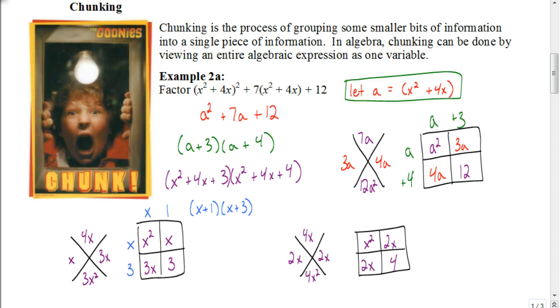So let's find the greatest common factor for each row and column here. For this row it would be x and for this one it would be 2. For this row it would also be x, and for this column it would also be 2. So we end up getting (x + 2) times (x + 2).